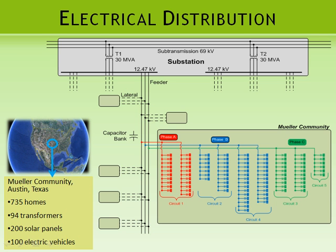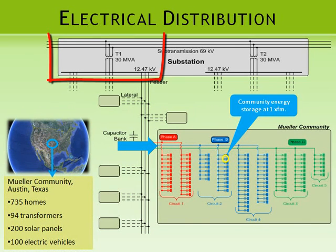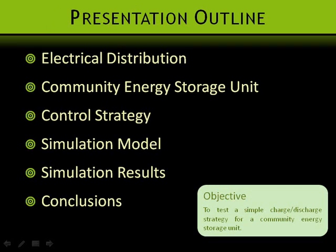This is the electrical distribution system for a residential community in Austin, Texas. The entire community is fed radially from one lateral, where each phase serves 20 to 40 transformers. The storage unit will be installed alongside one of the 94 transformers. This shows that the impact of the storage unit will be small as seen from the substation. However, there may be advantages for the homes downstream of this particular transformer.